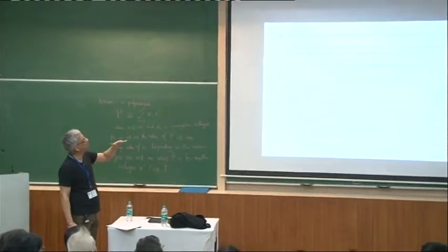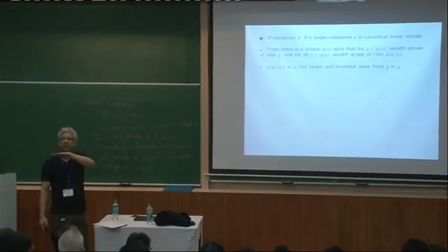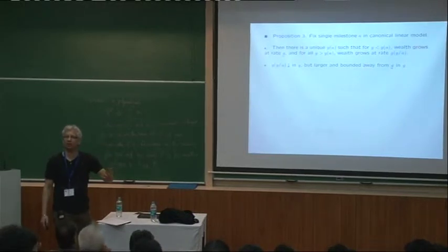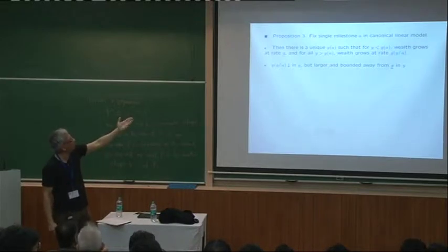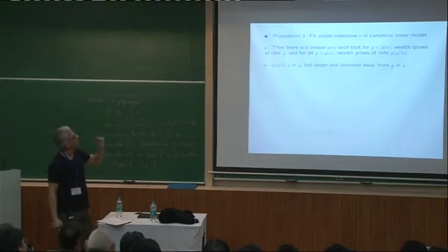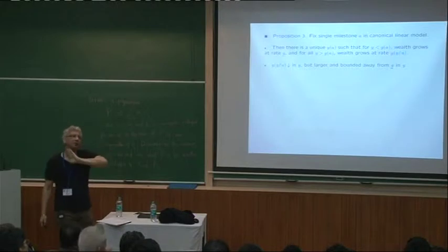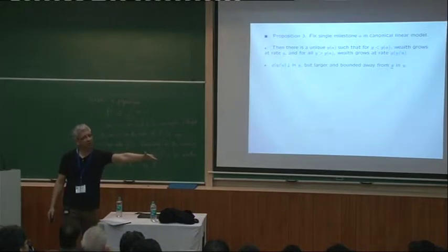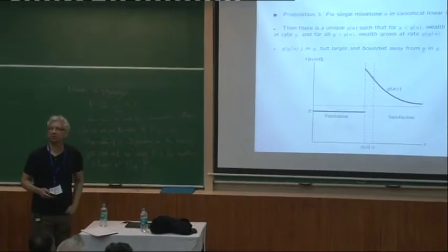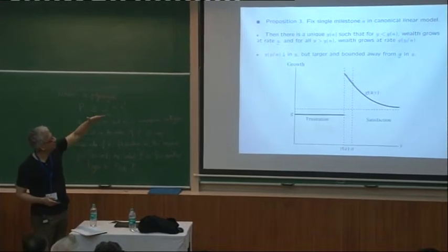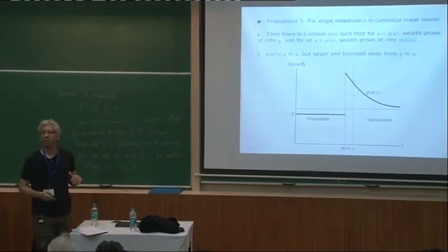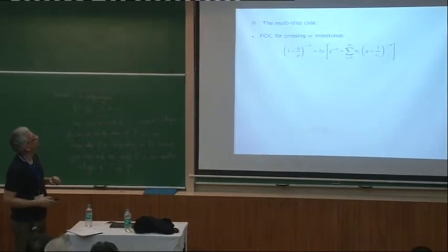Can you guys still hear me at the back? Is that okay? There's a unique value of parental wealth such that if you're lower than that value, wealth grows at this rate G lower bar, which is just flat. And above that, it grows at a rate which depends on the ratio of your income to aspirations. And G of this R, or what I'm calling Y over A, it declines in Y. So as I said, the growth rate jumps and then the growth rate starts to fall again. But it's always larger and it's bounded away from G lower bar. So even as your wealth goes to infinity, your growth rate doesn't come back to G lower bar. It stays higher than G lower bar.